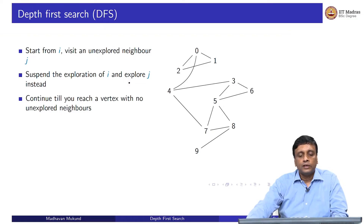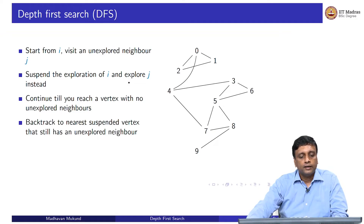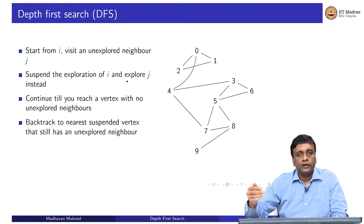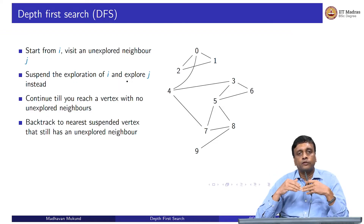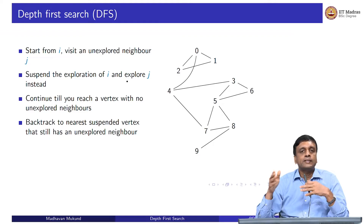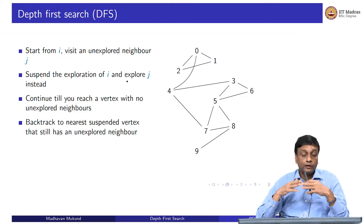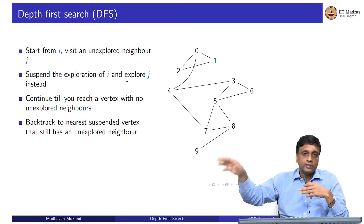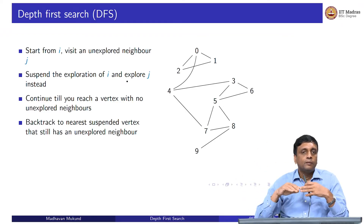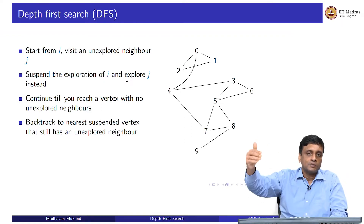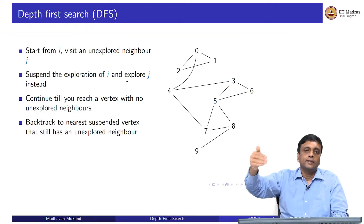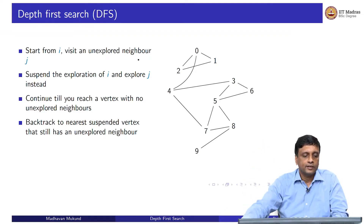We continue until we reach a vertex which has no unexplored neighbors. When we hit that point, because we did not look at all neighbors before — we explored the first neighbor found, and the second neighbor may or may not have been explored via a roundabout route — if we find a neighbor which is not explored, we visit that. We backtrack systematically: we take the last place we got stuck, come back to the previous step, backtrack there, and so on.